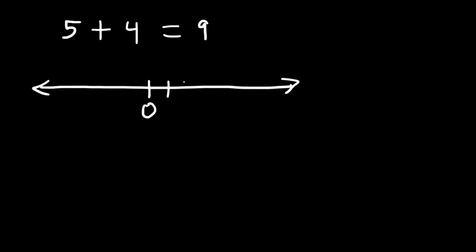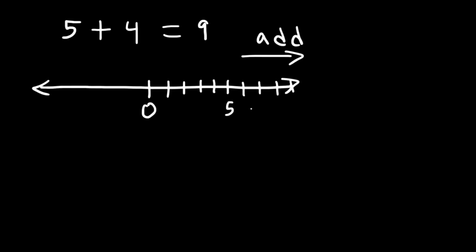0 is in the middle, and here is 5. If you want to add 4 to 5, simply travel 4 units to the right. Anytime you wish to add a number, travel to the right on a number line. If you wish to subtract, move to the left. So if we travel 4 units to the right, the next point is 6, then 7, then 8, then 9. So 5 plus 4 is 9.